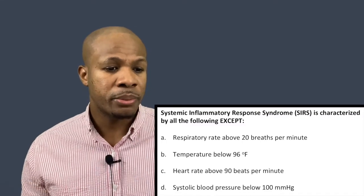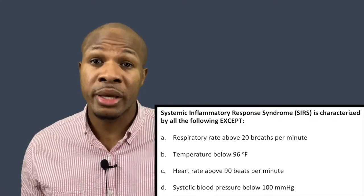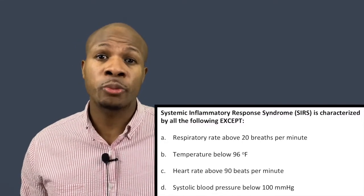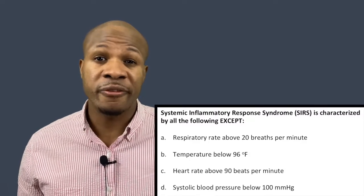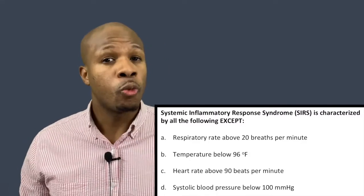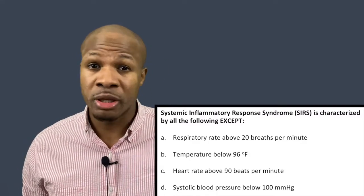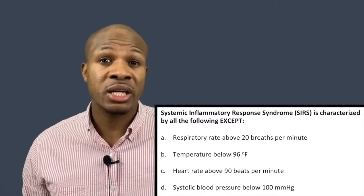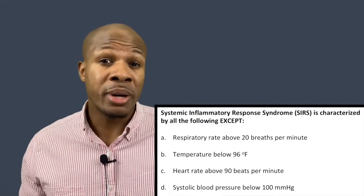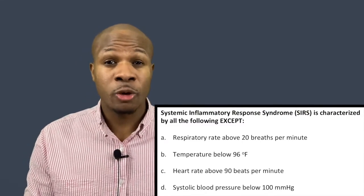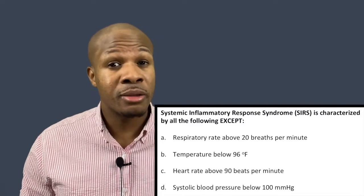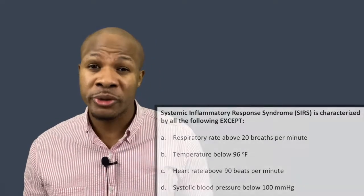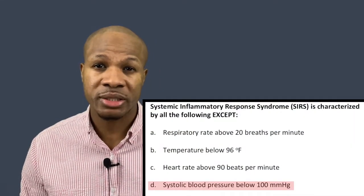That leaves us with answer D, which has to be the exception. D says systolic blood pressure below 100 mmHg. A low blood pressure is linked to stress, but remember SIRS is more of the preliminary distress syndrome that occurs before the body actually shuts down. Once blood pressure starts dropping below 100 and even lower, that is a sign of severe sepsis. SIRS is the beginning of sepsis, but once blood pressure drops and organs start failing, that's severe sepsis — so D is the exception.